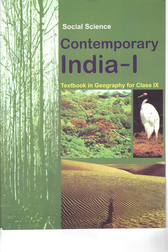The Deccan Plateau is a triangular landmass that lies to the south of the river Narmada. The Satpura Range flanks its broad base in the north, while the Mahadeva, Kaimur Hills and the Maikal Range form the eastern extension. The Deccan Plateau is higher in the west and slopes gently eastward. An extension of this plateau is also visible in the northeast, locally known as the Meghalaya, Karbi Anglong Plateau and North Cachar Hills, separated by a fault from the Chotanagpur Plateau. These prominent hill ranges from west to east are the Garo, Khasi and Jaintia hills.